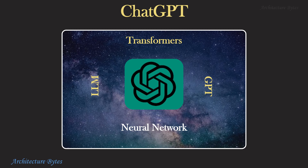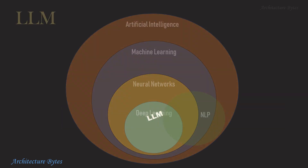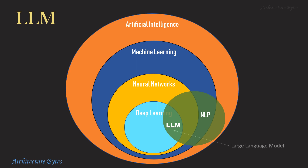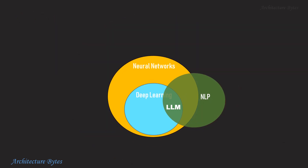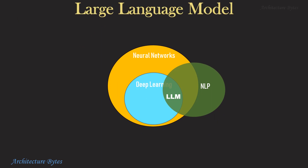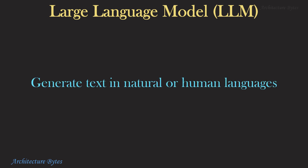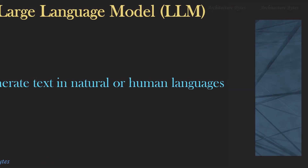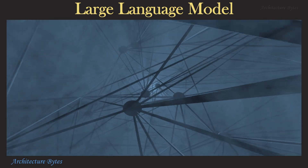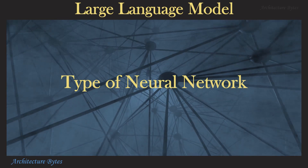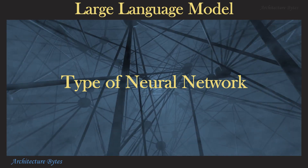Next, let us look at large language models, or LLMs. In the AI landscape, large language models are at the crossroads of natural language processing (NLP) and deep learning. Understanding what large language models are is important to understanding how ChatGPT works. LLMs can generate text in natural or human languages like English, Spanish, French, and others. A large language model is a type of neural network which is very large, with millions of neurons and billions of connections between them, each connection having a weight.